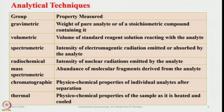Let us classify different types of analytical methods and what we get from them. In the gravimetric method, we measure the weight of a pure analyte or a stoichiometric compound. In volumetric methods, we measure the volume of a standard reagent reacting with the analyte. In spectrometric methods, we measure the intensity of electromagnetic radiation emitted or absorbed by the analyte. In radiochemical methods, we measure the intensity of nuclear radiation emitted by the analyte. In mass spectrometry, we measure the abundance of molecular fragments derived from the analyte.